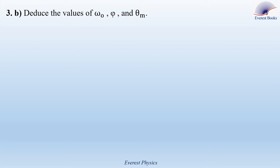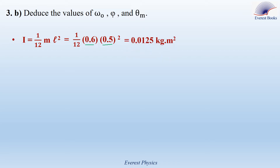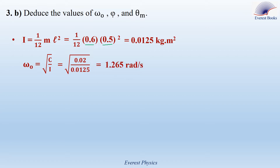Part 3B: Deduce the values of omega₀, phi, and theta_M. First, calculate the moment of inertia: I equal ML squared over 12, with M equal 0.6 kg and L equal 0.5 m, giving I equal 0.0125 kg·m². Then omega₀ equals the square root of C over I, with C equal 0.02 N·m/rad and I equal 0.0125, giving omega₀ equal 1.265 radians per second.